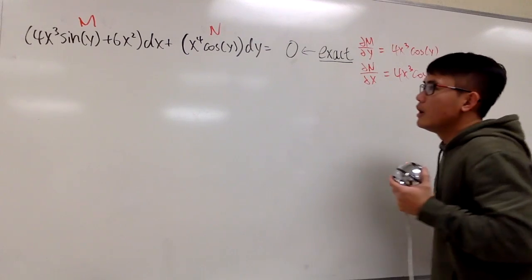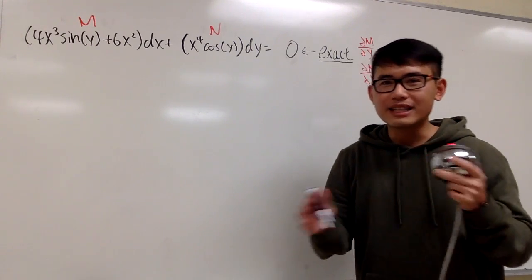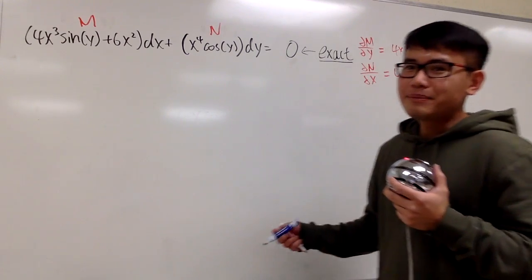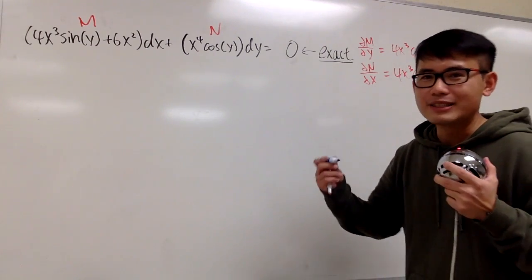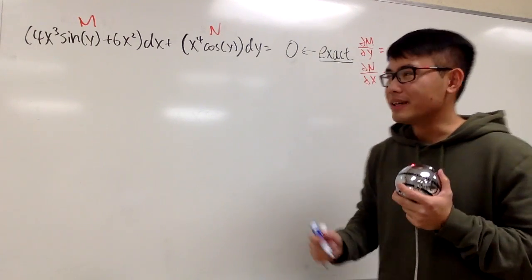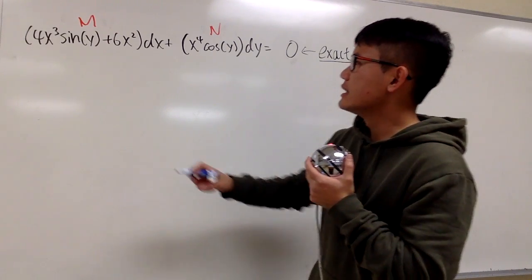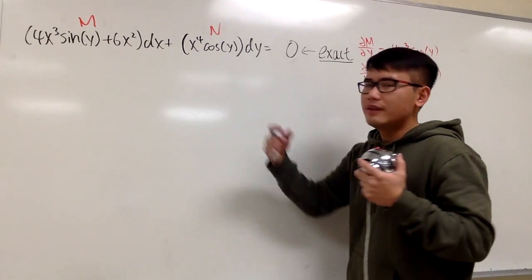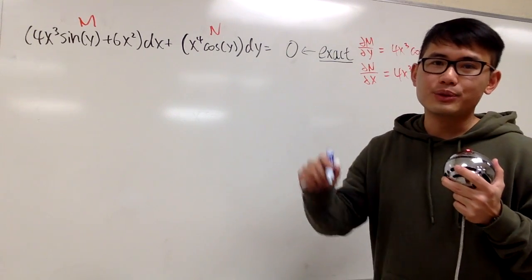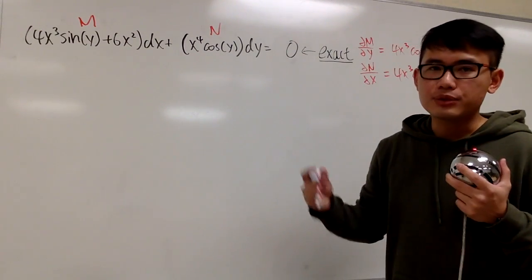Alright, so we have an exact equation. Everything is nice because we know how to solve an exact equation already — you can watch my other video for that. But here is what happened: somebody takes out a blue marker and looks at this exact differential equation. He sees that there are a lot of x-powers in these terms, so he is going to divide everything by x³.